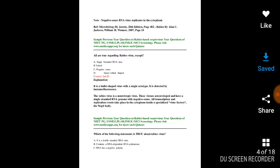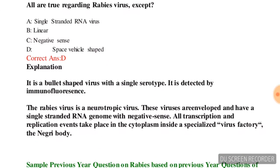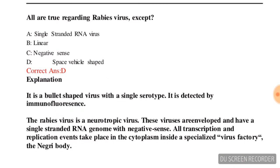Next question: all are true regarding rabies virus EXCEPT which of the following? Options are: single-stranded RNA virus, linear, negative-sense, bullet/space-vehicle shaped. The correct answer is option D — space-vehicle shape is the exception.